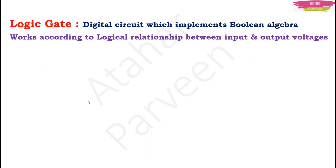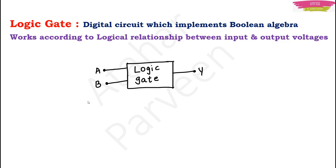Logic gates are digital circuits that implement Boolean algebra. A logic gate works according to the logical relationship between the input and output voltages. Basically, a logic gate will have two inputs — named A and B — and one output, usually named Y. What Y will be depends on which logic gate you are using, and that logic gate uses Boolean algebra, so your output will be a Boolean expression.